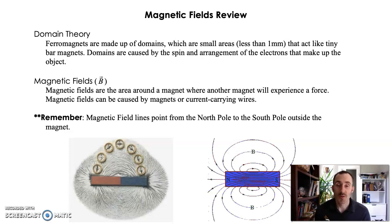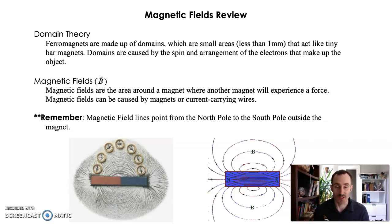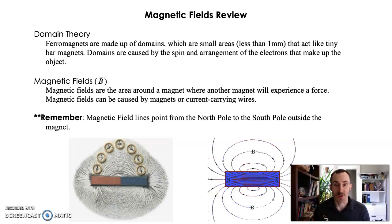If you've been following along, we've been talking about fields. With electric fields, we took some old ideas we had about fields and tweaked them so that they're a bit more universal, and then we also added on some new ideas about electric fields. Now we're going to do the same thing for magnetic fields — talk about what we already knew, adjust it to make it more universal, and then talk about some new ideas.